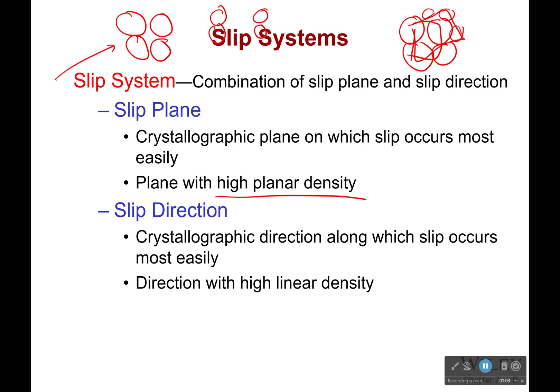Looking at this slip plane right here, this is not the best direction because there's a gap there. However, these directions are good — those would be my slip directions because they have the highest linear density. If you're trying to figure out what planar density or linear density is, you would find the area and figure out how many atom cross-sections are in that area. For slip direction, it's actually just the inverse of the distance between the two closest atoms along that line.